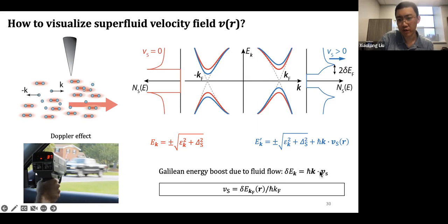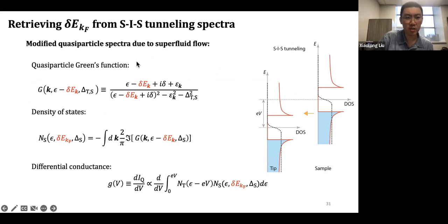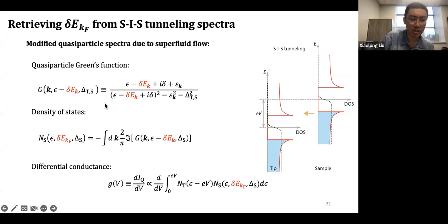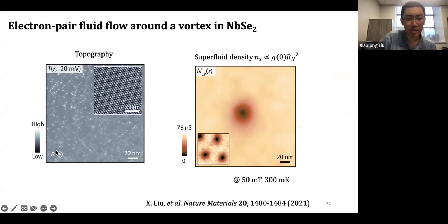Our technique using a superconducting tip: we measure the quasiparticle density of states and model it using the Green's functions where the energy E has to be corrected by the kinetic energy boost — which is proportional to the flow speed. In the density of states this modification carries over, and if you can measure the differential conductance — which is a convolution of superconducting tip density of states and your modified sample density of states — you can figure out the energy boost. We go back to NbSe₂, a robust superconductor, and create a vortex at very low magnetic field, so the vortices are far enough apart to be considered independent.